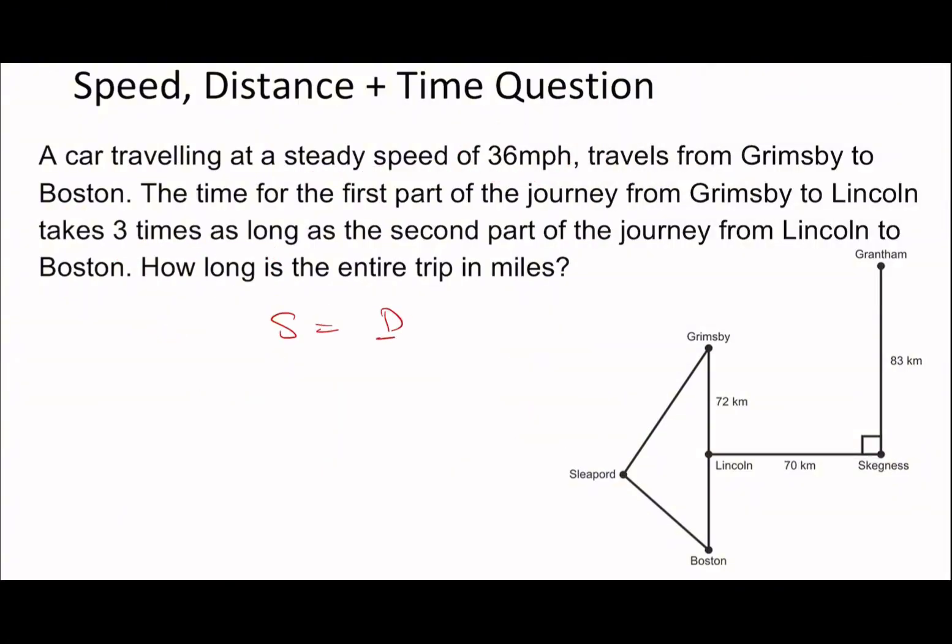If we go to the equation, speed is distance over time. We're told speed remains the same, and the time taken is one third. If speed remains the same, the distance must also be a third in order to end up with the same speed. If the first part is three times as long, the second part is only 24 kilometers.